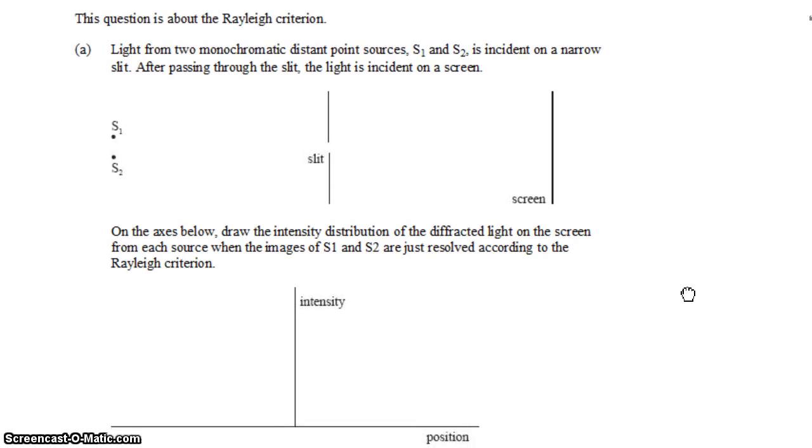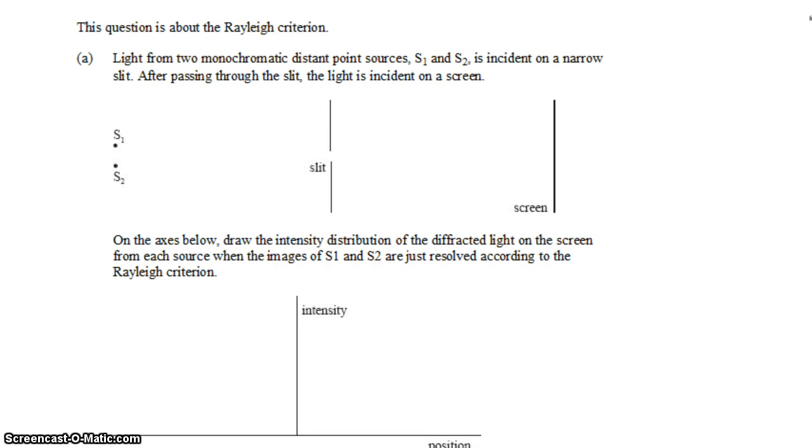We have light from two monochromatic distant point sources, S1 and S2, and they're incident on a narrow slit. After passing through the slit, the light is incident on a screen over here. So the light from S1 passes into the slit and diffracts, and we get a diffraction pattern over here. And the light from S2 passes through the slit, arrives over here, and we get a diffraction pattern over here.